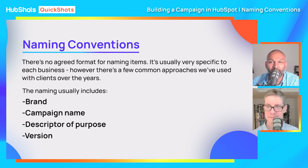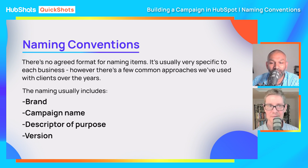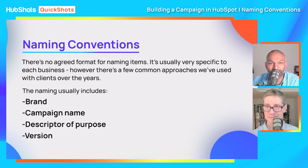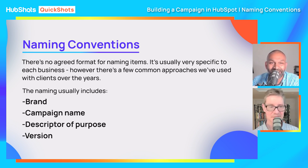We want to do that because it's super important to understand that when we name things correctly, when we go and track things, we know very well what is working and what is not working, and how to easily track it without trying to figure out what's going on. That's a really key aspect of being able to manage your campaign well and track things down.